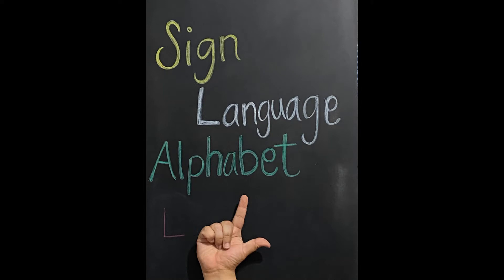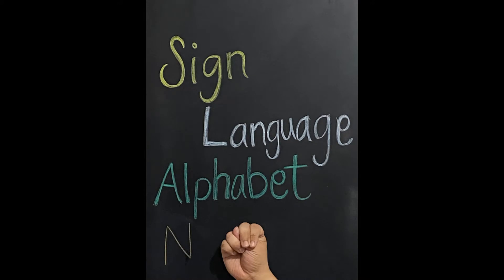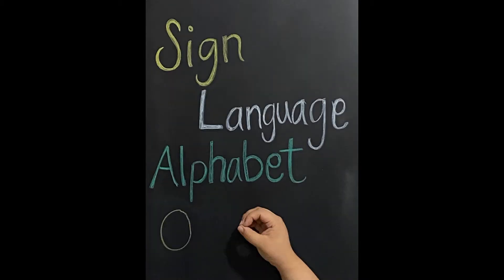L is just making an L with your index finger and your thumb. M is a fist with your thumb in between your pinky and your ring finger. N is a fist with your thumb between your ring finger and your middle finger. For O, you're pretty much just going to be making an O with your fingers.